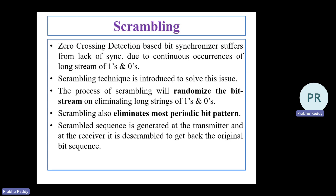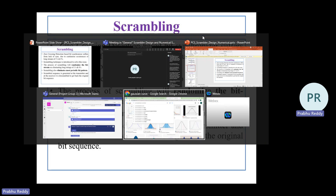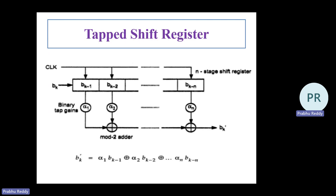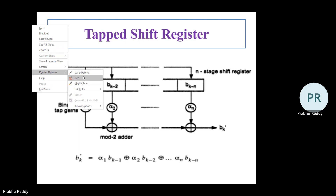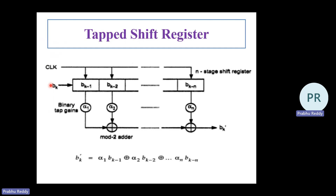To understand how a scrambler is designed, we use the tapped shift register concept, wherein flip-flops are arranged to make a tapped shift register. The bit bk is the input bit sequence supplied to different shift registers, all working based on the applied clock input. Tapped gains a1, a2 up to an are given to a modulo-2 adder, which is an XOR gate. The output bk-dash equals alpha1·bk-minus-1 XOR alpha2·bk-minus-2, up to alphaN·bk-minus-N.